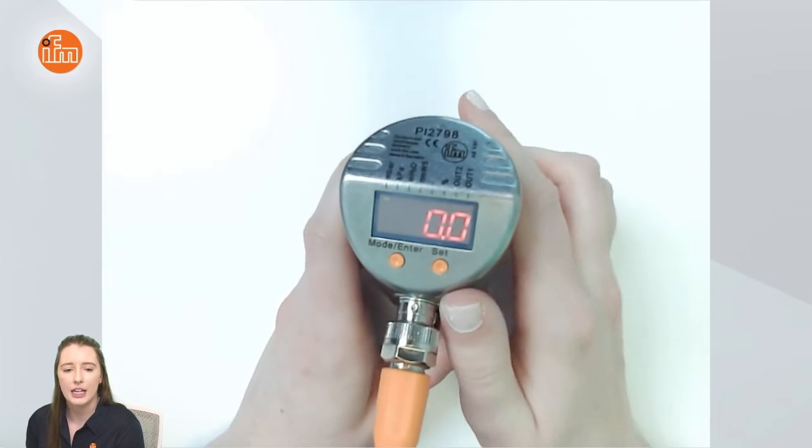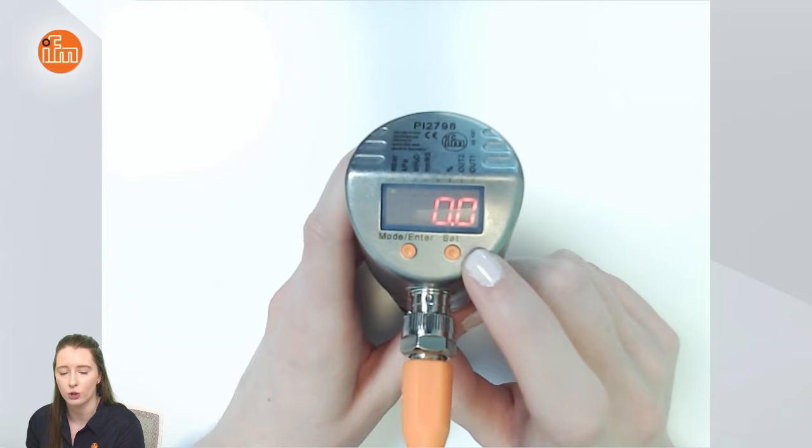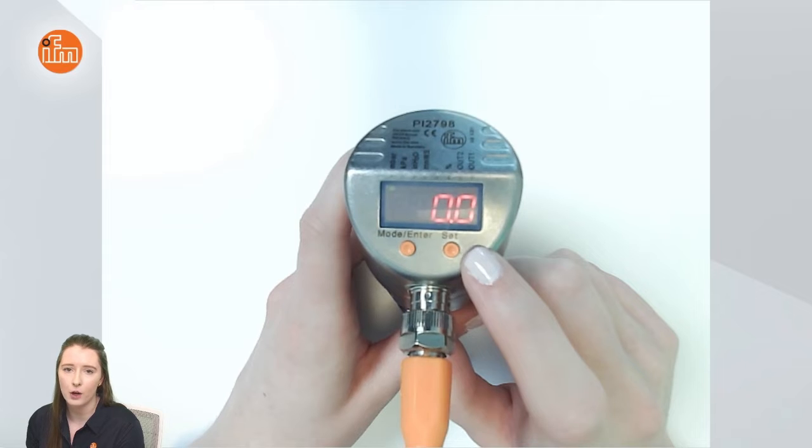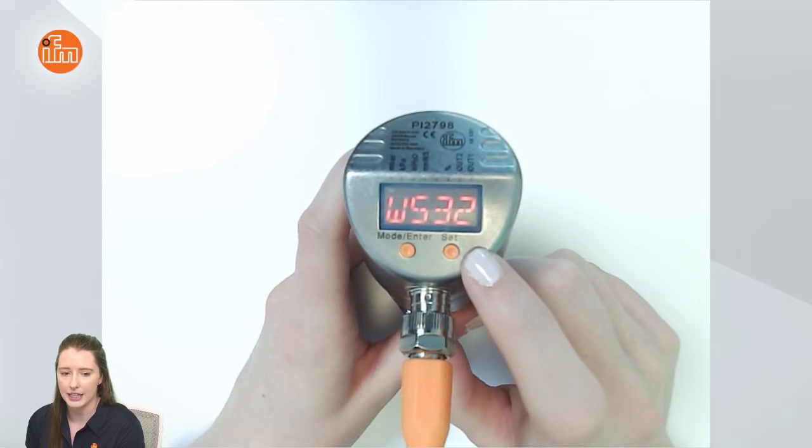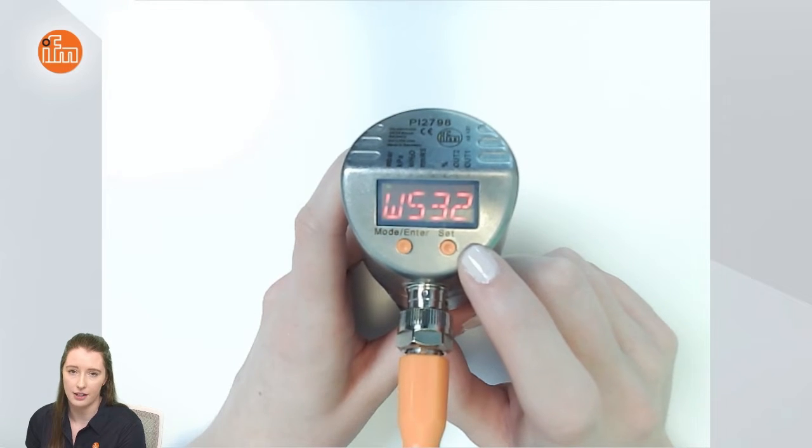Before I do this I need to mention that this unit is currently displaying the W532 error because output 2 is factory set for an analog output and right now I have the output 2 wire not connected to anything. To get this error away you would connect output 2 to some type of load or you would change the output 2 parameter to a switching output instead of an analog output.